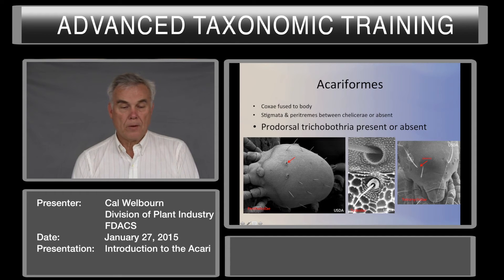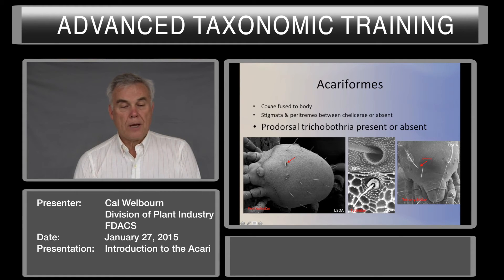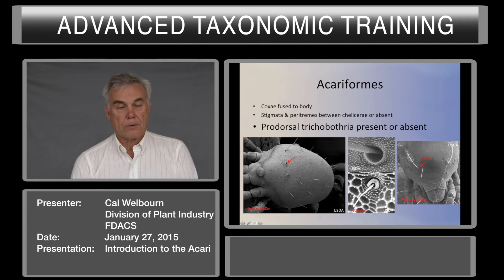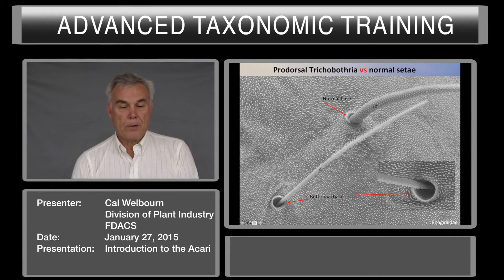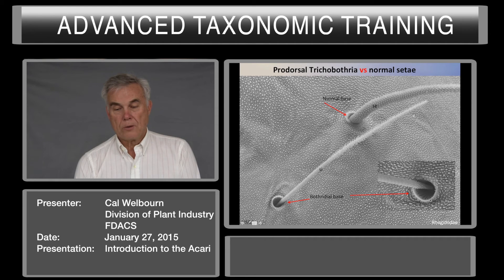Prodorsal trichobothria — present or absent. By prodorsal trichobothria, we're talking about a structure that has what we call a bothridial base. This is a pit-like structure that the seta comes out of. Here's the bothridial base, but the seta is missing. When you look at it under high power magnification, you see it's actually a cup-like structure, whereas a normal seta's articulation is right there on the surface of the cuticle. Here's a close-up of a bothridial base and a normal seta — you see the normal seta has no pit around it. In the trichobothria, the bothridial base is a pit.